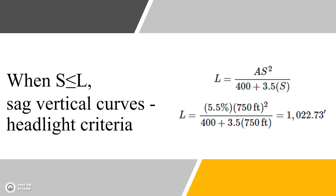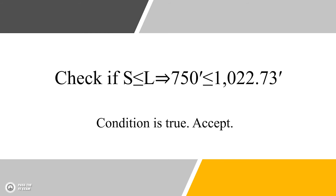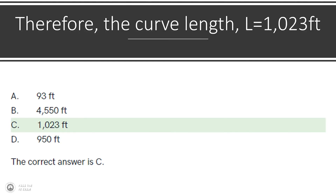For S less than or equal to L for SAG vertical curves, you use the equation shown here. Make sure you have A properly calculated, plug it in, and you get 1022.73. Do a check: the stopping sight distance given, 750, is less than the length you calculated — therefore it's true, and you accept that as your answer. It's a fairly simple problem, but make sure your percentages are right for the A and G terms, and don't get confused between S and SSD. If you keep those in mind, these problems are essentially plug and chug.